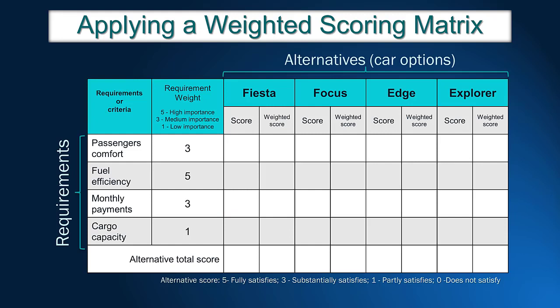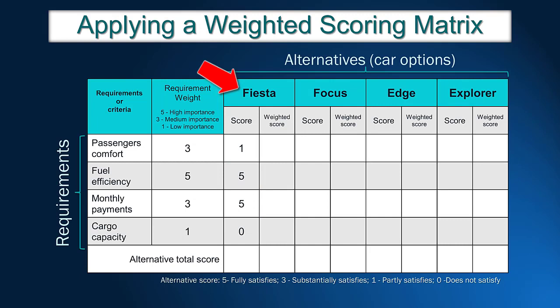In the following step, we need to evaluate each alternative on each requirement. Let's start with the first alternative, Ford Fiesta. John thinks that this car satisfies partially the requirement comfort, so Fiesta receives score 1. In terms of fuel efficiency and payment, Fiesta receives the highest score — 5 — because it is the cheapest and has the better fuel efficiency. For cargo capacity, Fiesta does not satisfy the needs and it receives score 0 on this requirement.